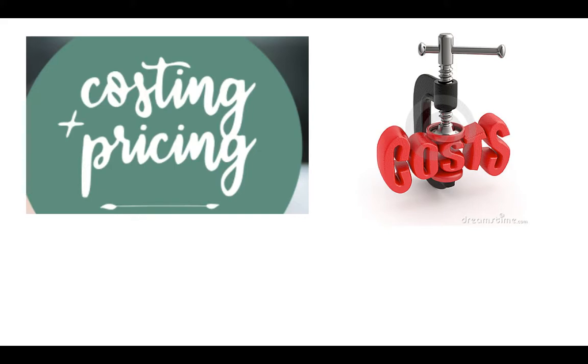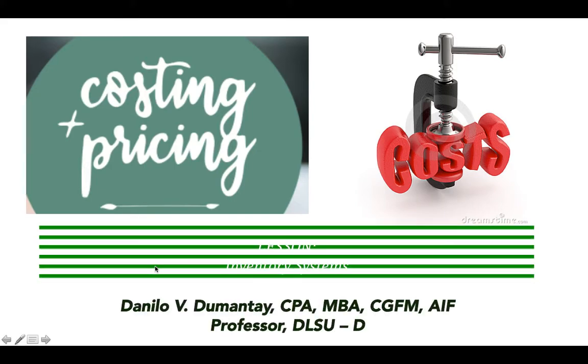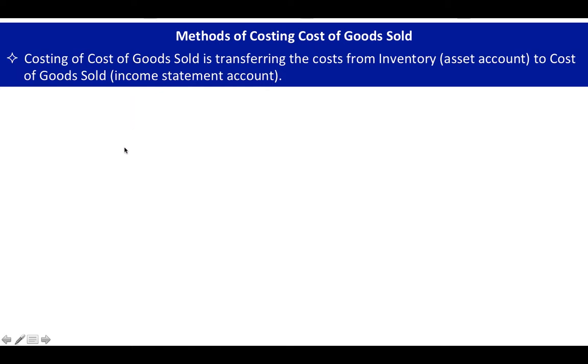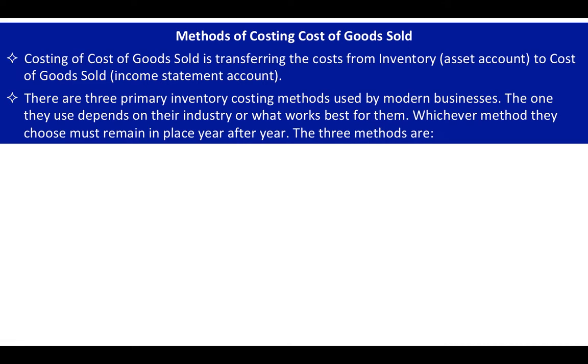Hi class, a pleasant day to all of you. This is your professor Dan, and in this video we are going to discuss the lesson on inventory systems. First, let us discuss the methods of costing cost of goods sold. Costing of cost of goods sold is transferring the cost from inventory, which is an asset account, to cost of goods sold, an income statement account. There are three primary inventory costing methods used by modern businesses. The one they use depends on their industry or what works best for them, and whichever method they choose must remain in place year after year, because accounting has a consistency principle.